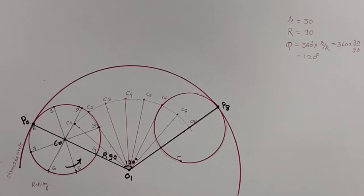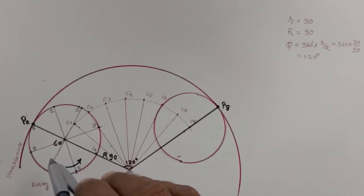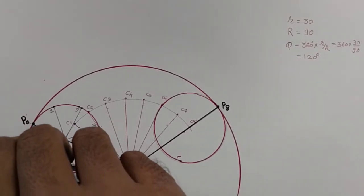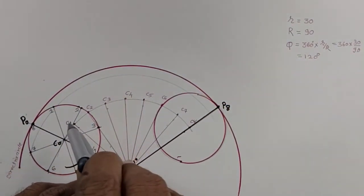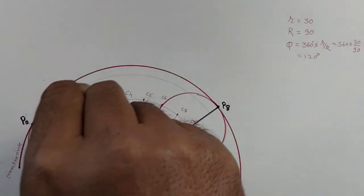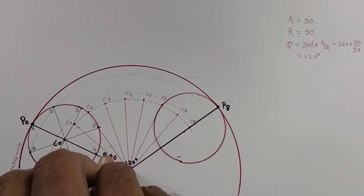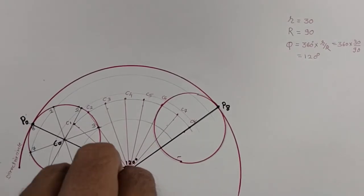The next step: we draw all the circles passing through the rolling circle points. First, I draw the circle which passes through points 7 and 1. Then the second circle passes through 2 and 6. Next, it passes through 3 and 5. Then last, it is our fourth circle through point 4.